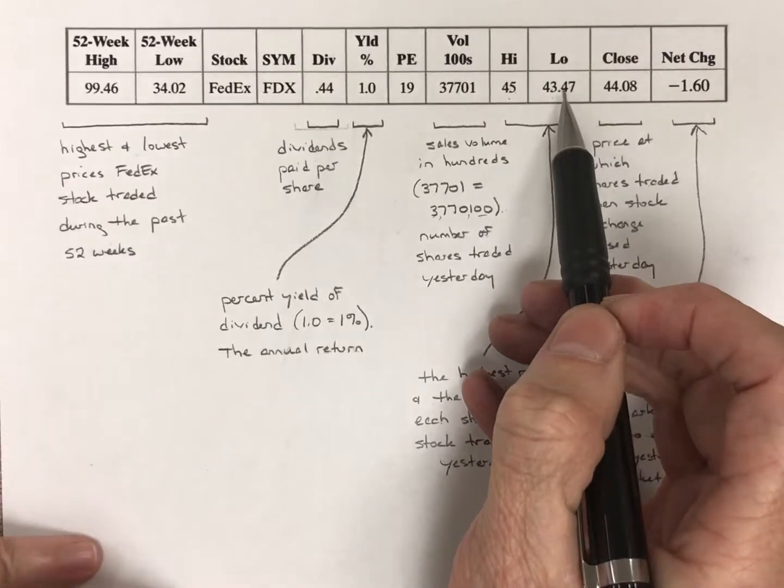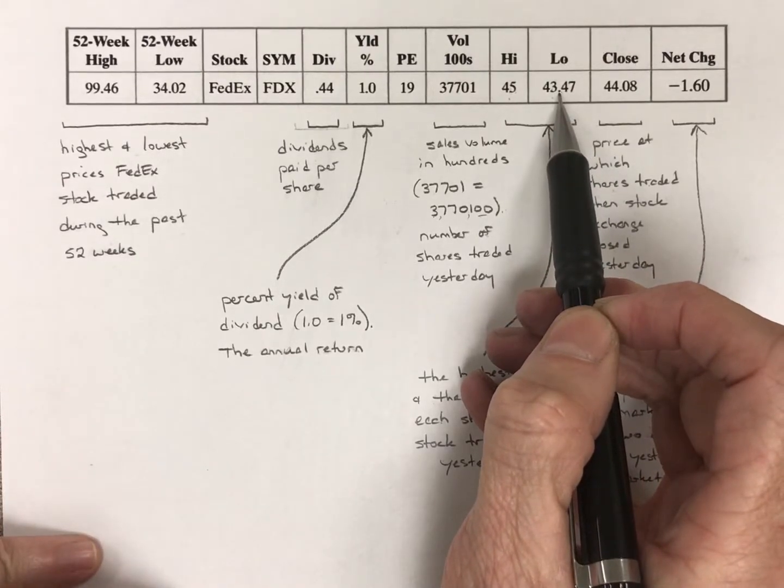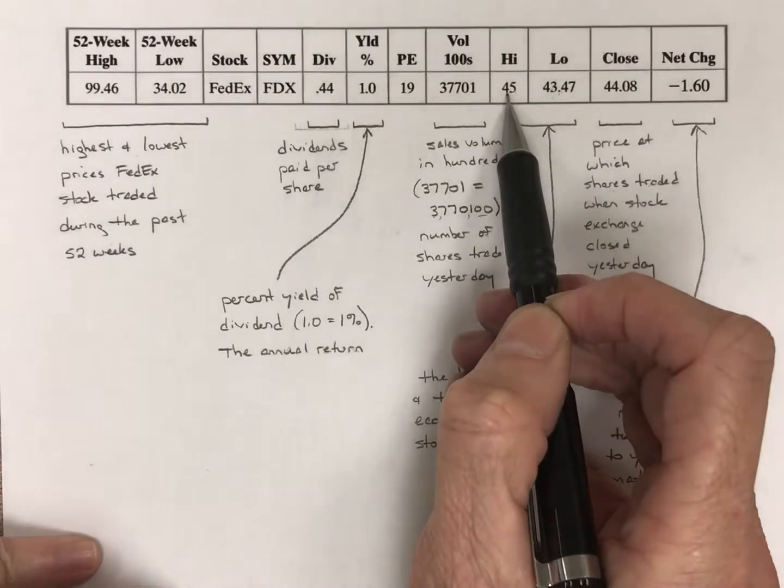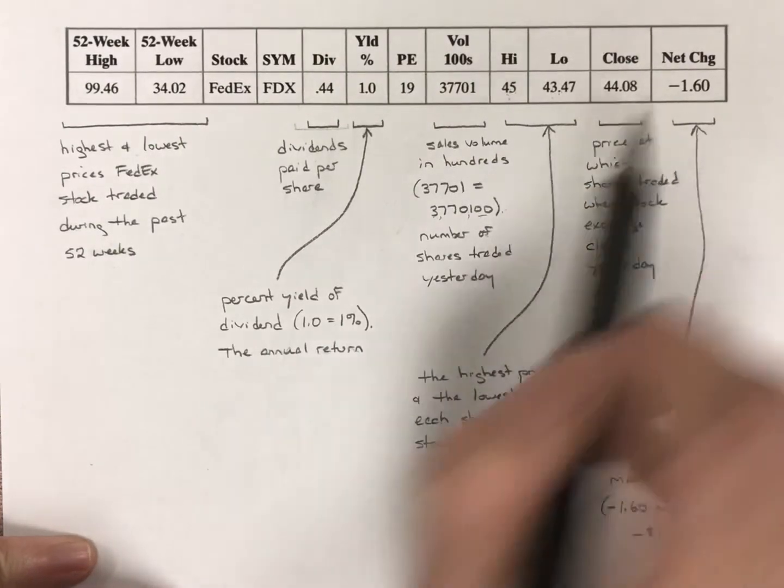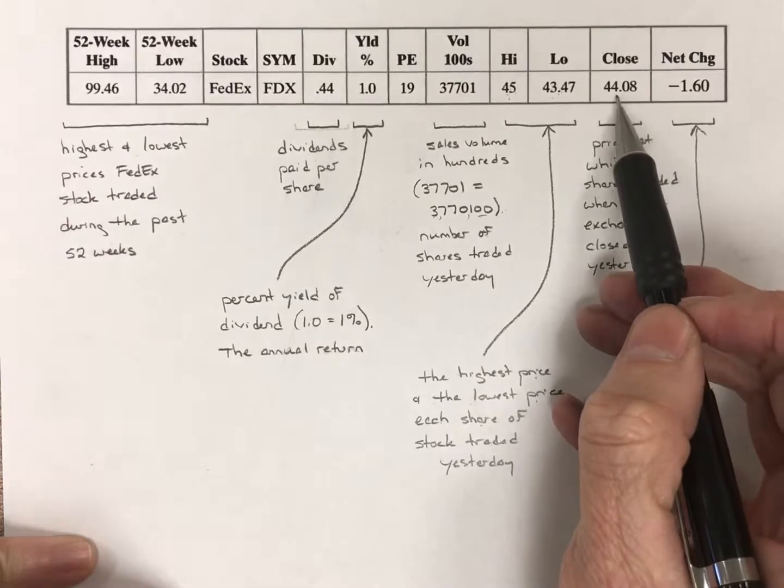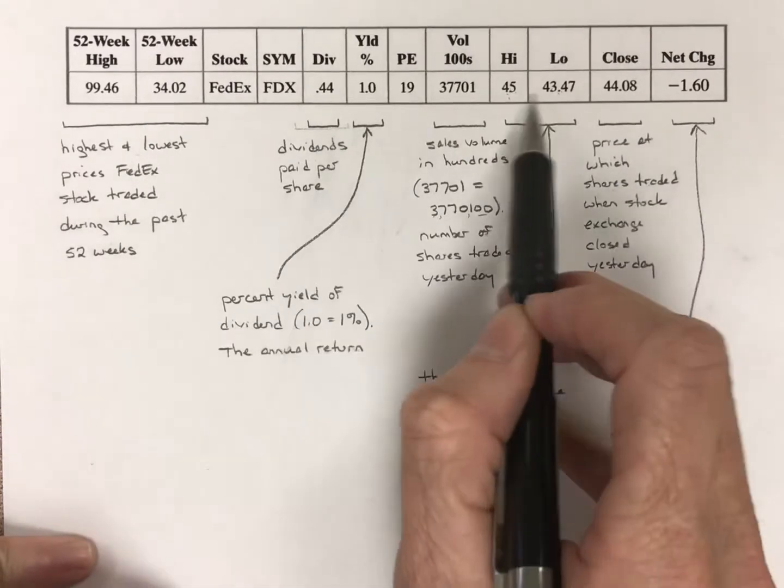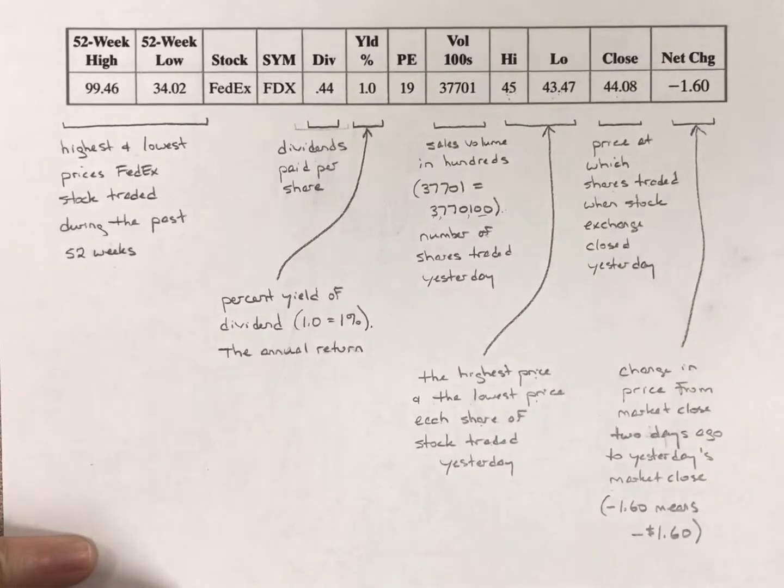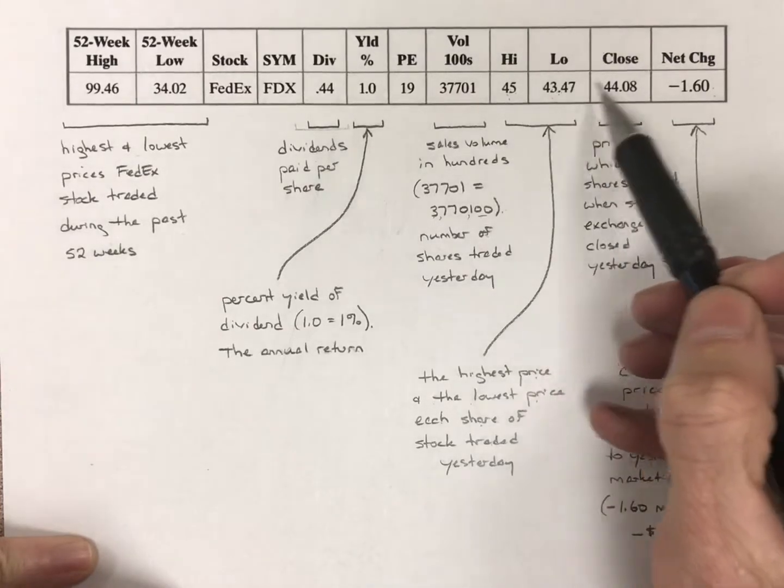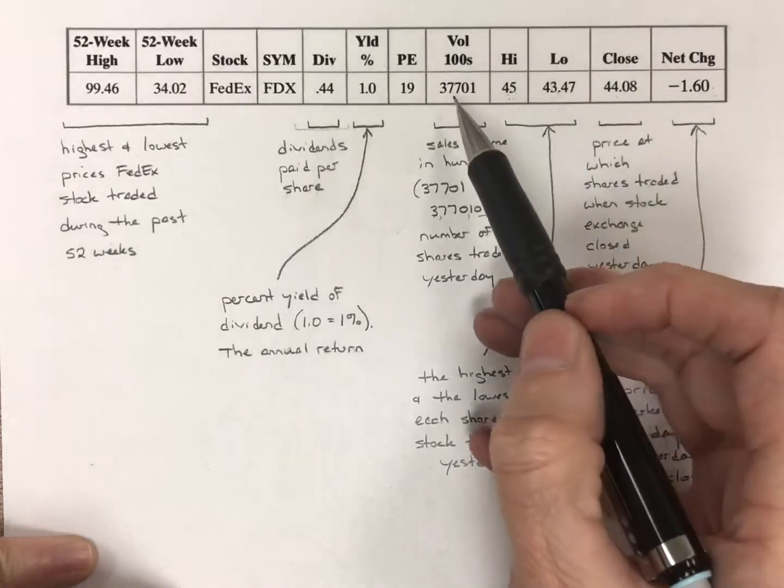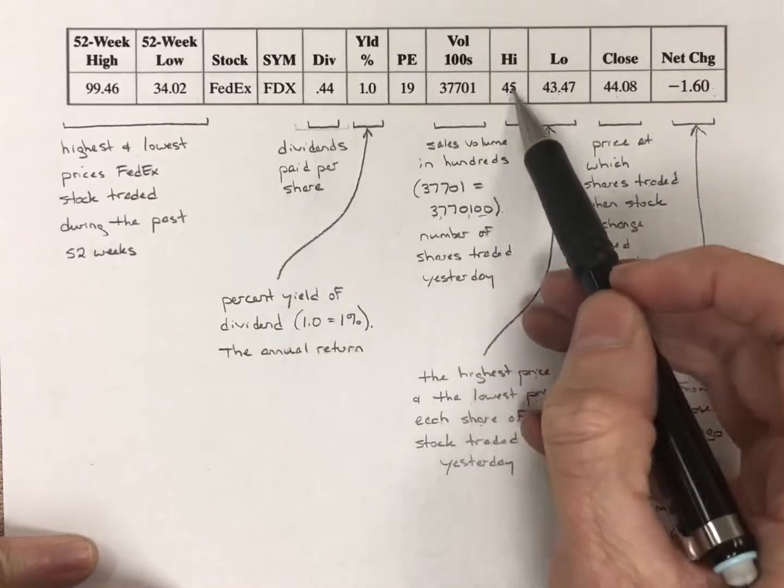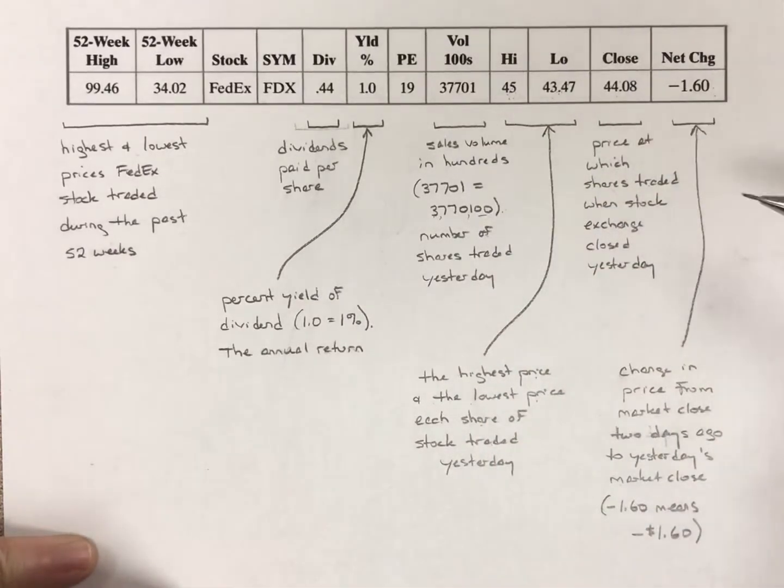So at some point, it hit a low of $43.47. At some point, it hit a high of $45 a share. When the stock market closed, it was trading at $44.08, right? In between these two in this case. And finally, the net change is, again, a daily look. These three are daily looks. Excuse me. These four are daily. These one, two, three, four, five. Excuse me. These five are daily looks.